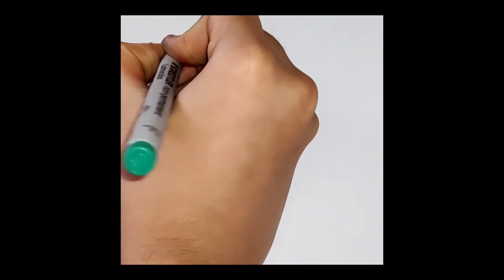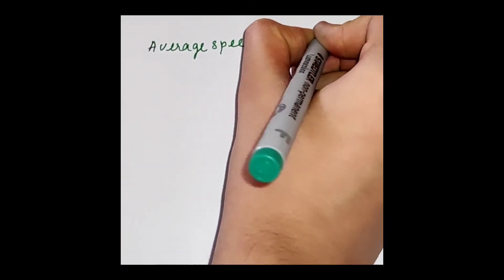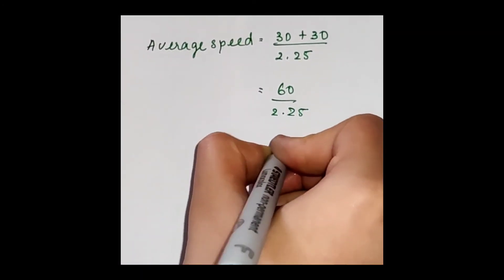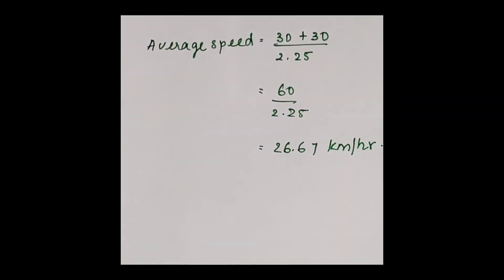Now let us find the average speed. Average speed is equal to 30 plus 30 divided by 2.25, is equal to 60 by 2.25, which gives us 26.67 km per hour. Thank you for watching.